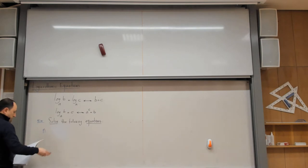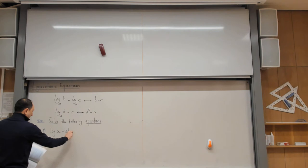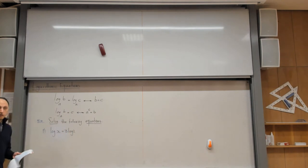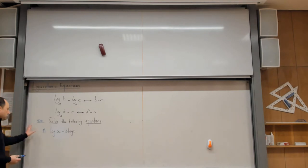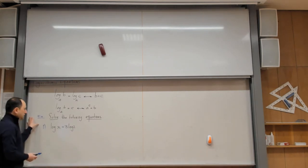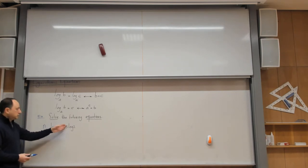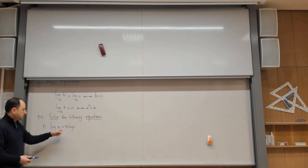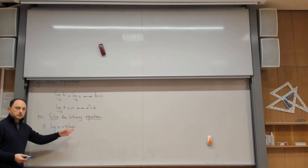Example 1: log(x) = 3·log(2). I want to find x. If that 3 wasn't there, it would be extremely simple: log(x) = log(2), same base 10, so I can just get rid of the logarithm and write x = 2.